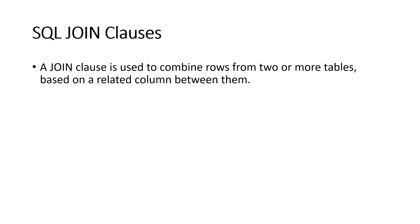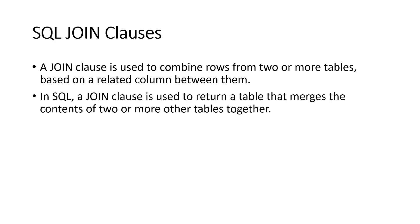A join clause is used to combine rows from two or more tables based on a related column between them. In SQL, a join clause is used to return a table that merges the contents of two or more other tables together. For example, if we have two tables — one containing information on customers and another containing information on the orders that various customers have placed.